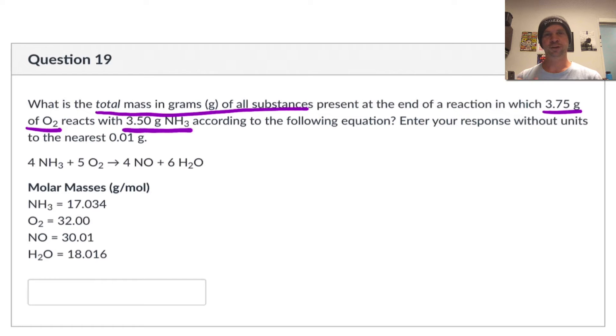Now here is a good example of a question where you should pause and read and think carefully. What is the total mass in grams of all substances present at the end of this reaction? One way we could proceed is to think about this as a limiting reactant problem and proceed to figure out the number of moles of O2 that's there, the number of moles of NH3 that's there, all that good stuff.